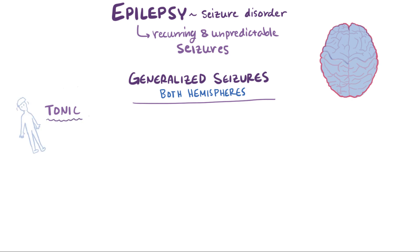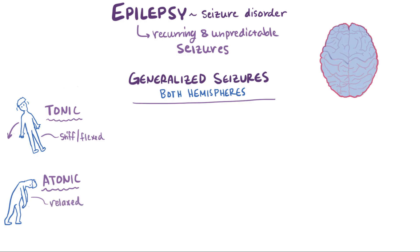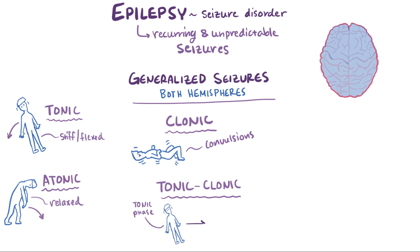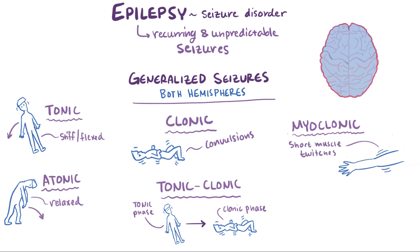One subtype is a tonic seizure, where the muscles all of a sudden become stiff and flexed, which can cause the patient to fall, often backwards. They can also be atonic, where the muscles suddenly relax and become floppy, causing the patient to fall forwards. Seizures can also be clonic, where there are violent muscle contractions, also known as convulsions. Tonic-clonic seizures are the most common generalized seizures, where patients experience a tonic phase where muscles suddenly tense up, followed by a clonic phase where muscles rapidly contract and relax. Myoclonic seizures are yet another type — short muscle twitches, sometimes just a single twitch, but sometimes many in a short amount of time.